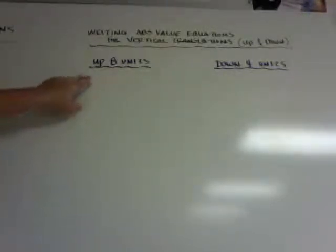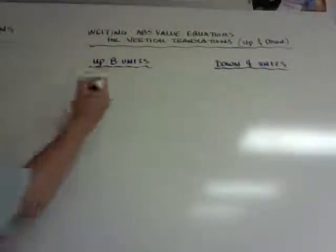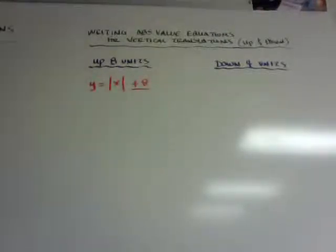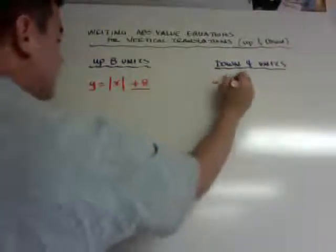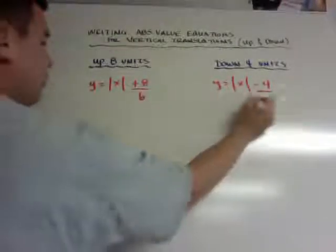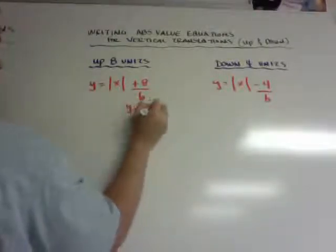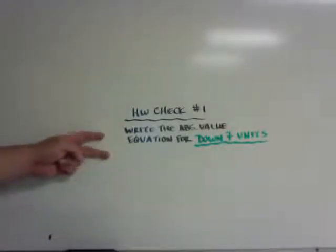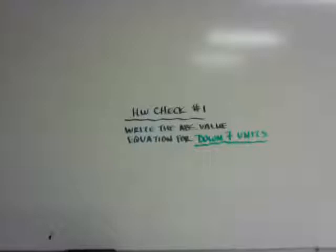When you write an absolute value equation for vertical translation going up and down, if they say write the equation for the absolute value translating up 8 units, all you write is your y equals absolute value of x, and then because it's up 8, you just put plus 8. If it's down 4, you just go down 4. That's your b or your y intercept, because it's outside of the absolute value. Homework check number 1 is write the absolute value equation for a translation going down 7 units.